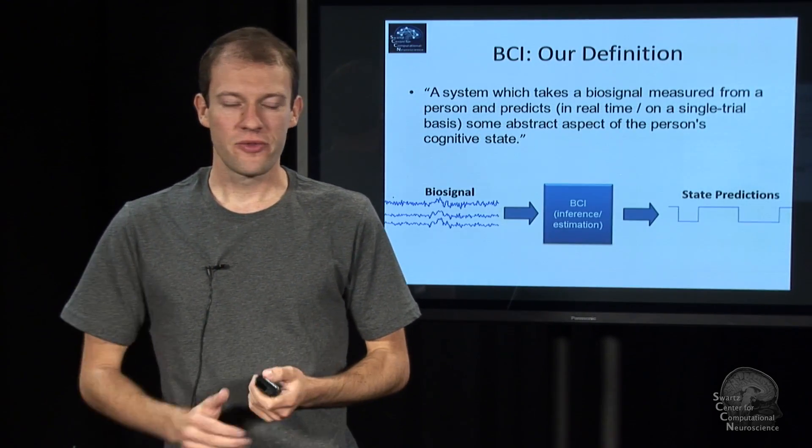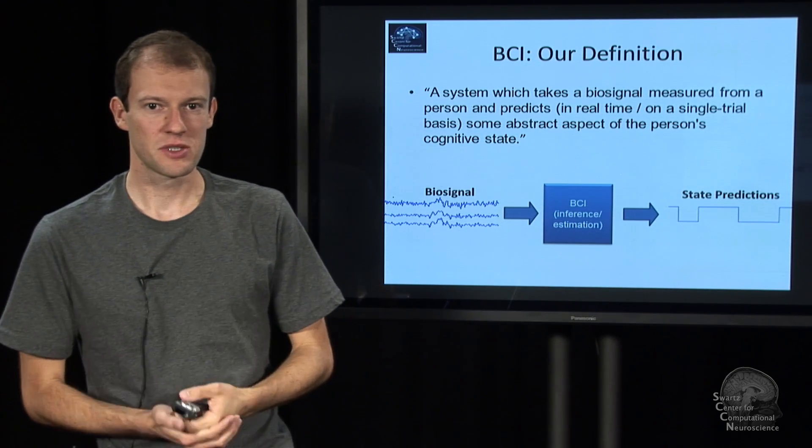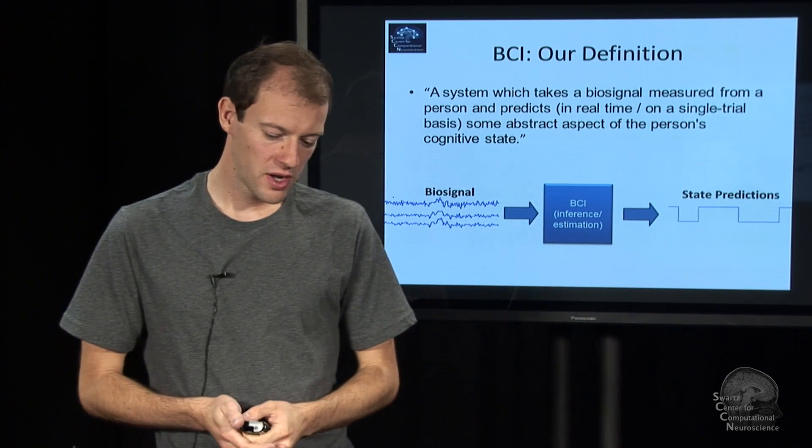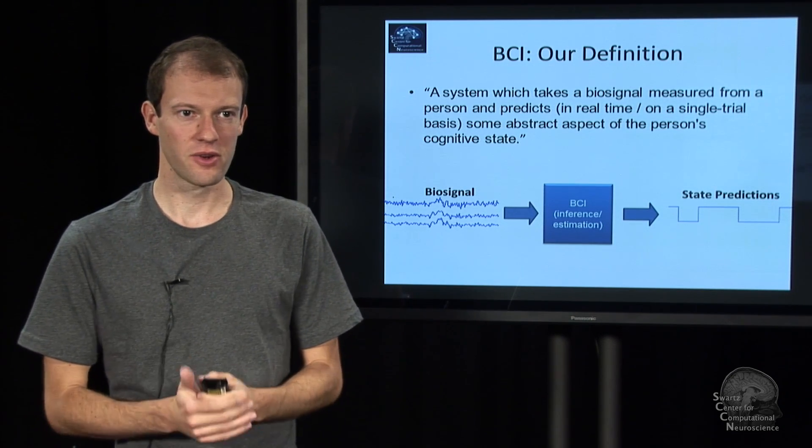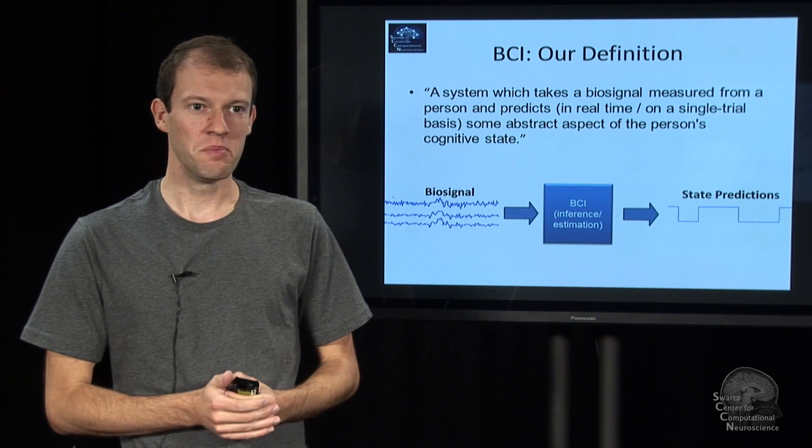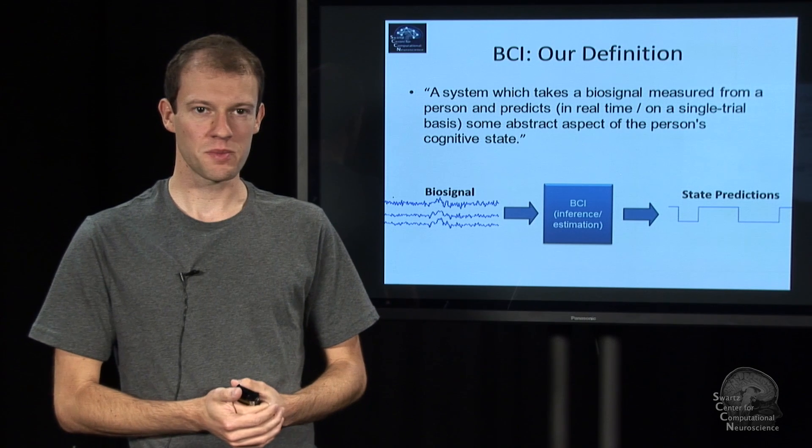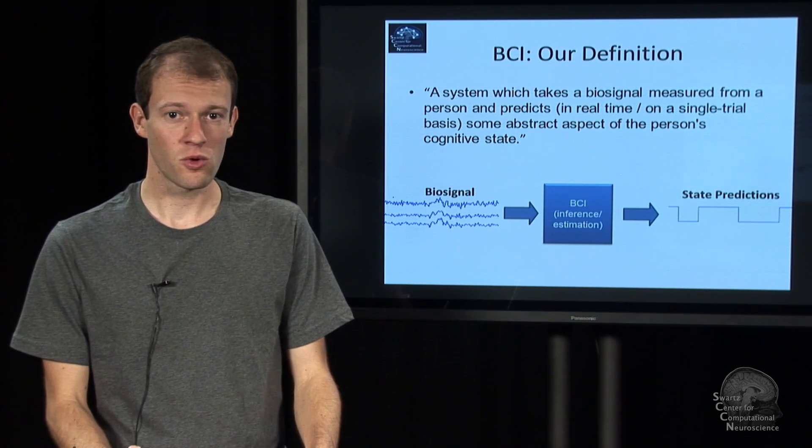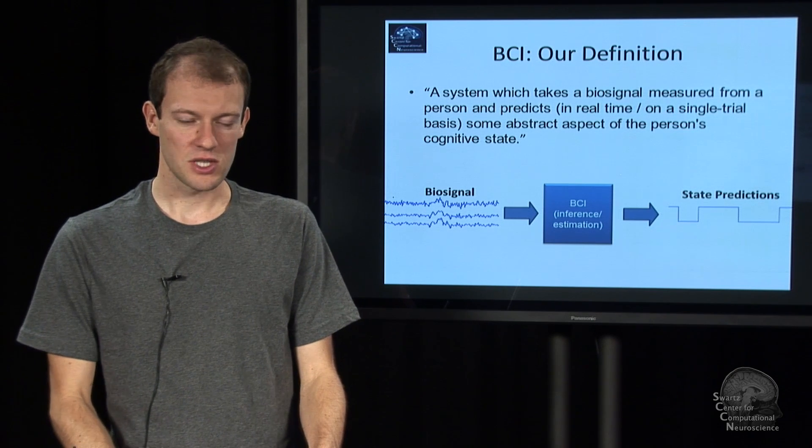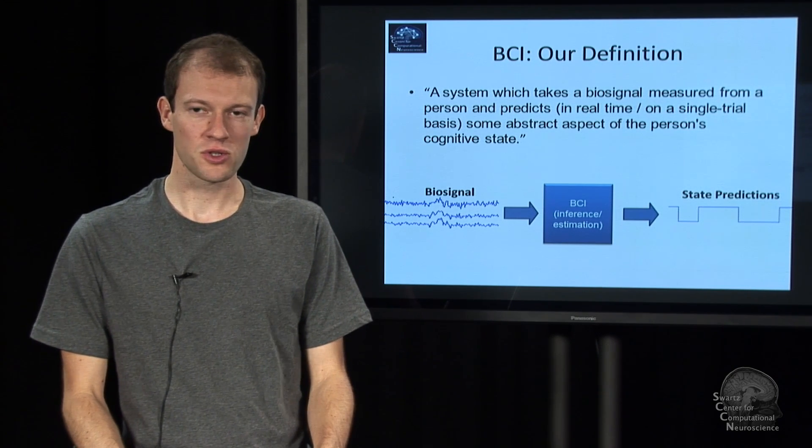And now, we have extended this definition to some extent to include everything that we can tackle with the technology that we have. So we say a BCI is a system which takes a biosignal measured from a person and predicts in real time or on a single trial basis some abstract aspect of the person's cognitive state.